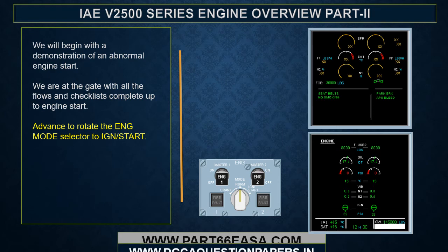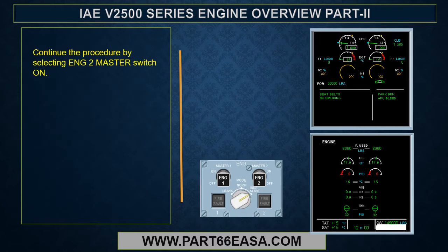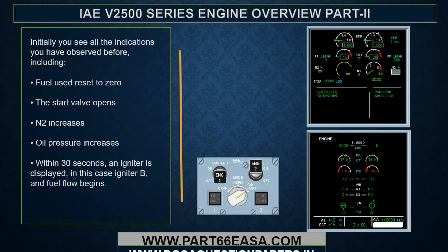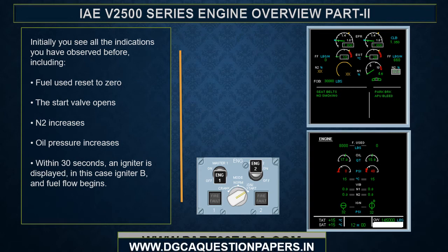We will begin with a demonstration of an abnormal engine start. We are at the gate with all flows and checklists complete up to the engine start. Rotate the engine mode selector to ignition start, then select engine 2 master switch on. Initially, you will see all the familiar indications — fuel used reset to zero, the start valve opens, N2 increases, oil pressure increases. Within 30 seconds, an igniter is displayed — in this case igniter B — and fuel flow begins.